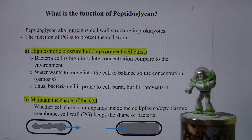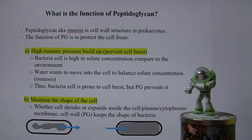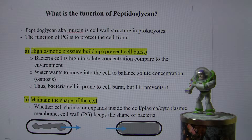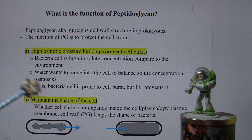Think of it like trying to blow a balloon inside a box. Once you blow the balloon as big as the size of the box, it's not going to expand — even if you put in a lot more air, because it just cannot expand. So the same idea: peptidoglycan is like a box and the cell cytoplasmic membrane is like a balloon.